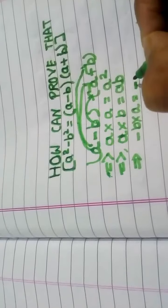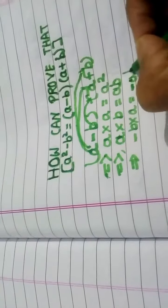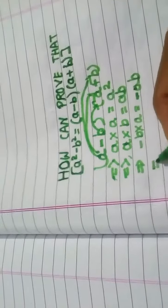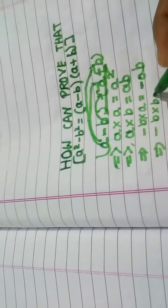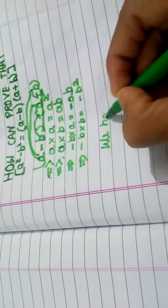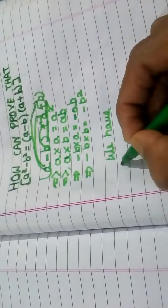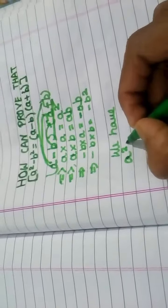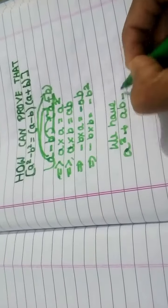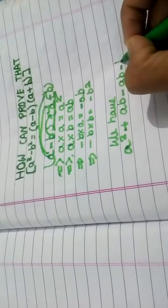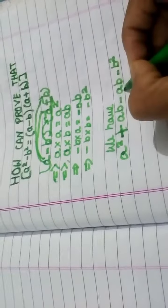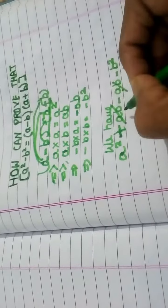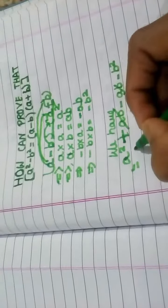Now this one is multiplied by this one — negative b into a — and because of the negative sign, this gives us minus ab. Then minus b into b gives us minus b squared. Taking the total sum: a squared plus ab minus ab minus b squared. The middle terms ab and minus ab cancel out, so they are nothing — non-valid — leaving us with a squared minus b squared.